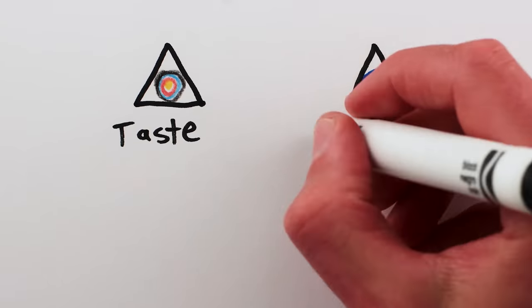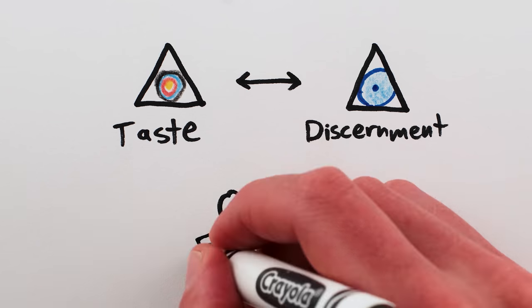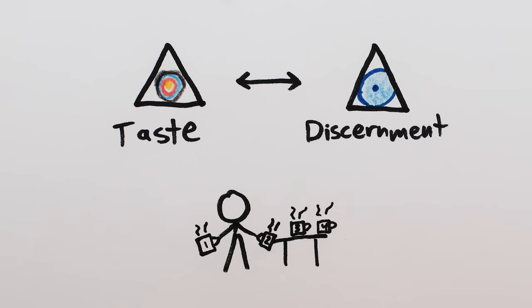While it's true that taste and discernment are linked, you know, like, after learning to discern the difference between different kinds of hot chocolate, you might develop a taste for one kind over others, so improving your discernment leads you to change your taste.